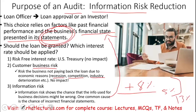And if the information risk is high, you may either say you are not going to give the loan, or you're going to add maybe another 7% to that 13% and charge 20%. So you have to compensate for that information risk.